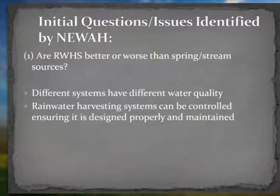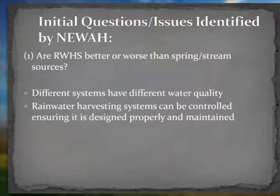There were a few questions and issues raised by NIWA at the beginning of the project. The first question was: are rainwater harvesting systems better or worse than spring or stream sources? There are limitations in data to accurately answer this question and each system can yield varying water quality. Rainwater harvesting, however, is a more closed system and the water quality can be controlled, ensuring the key quality barriers identified earlier are implemented and operational.